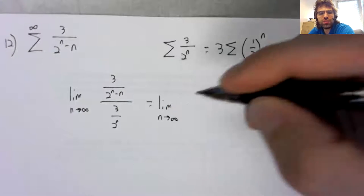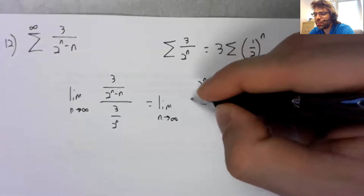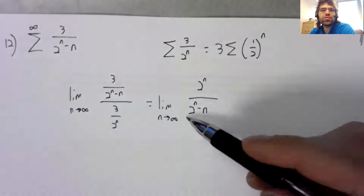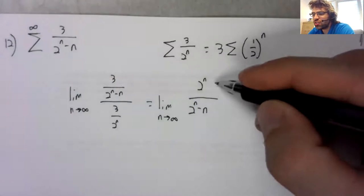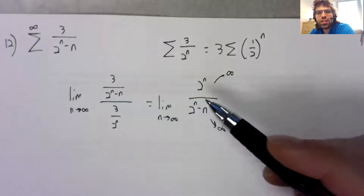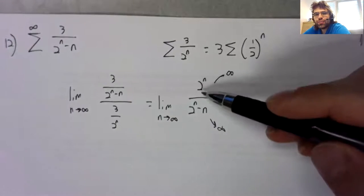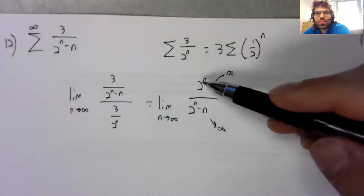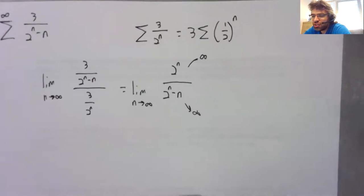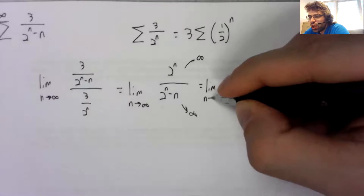is the limit comparison test. And this might be slightly tricky, actually. Because first of all, this is indeterminate infinity over infinity. To take this limit, we need L'Hopital's rule. To do that, we need to be able to take the derivatives of these exponential functions. And that might be a bit of a stumbling block,